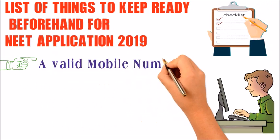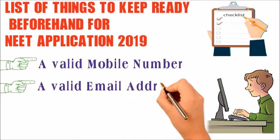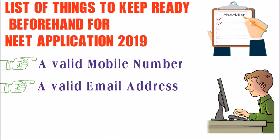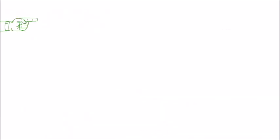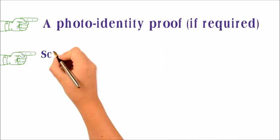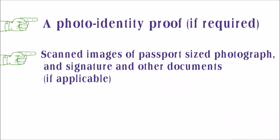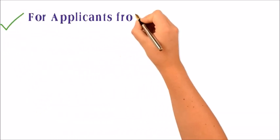For the list of things to keep ready beforehand: number one is a valid mobile number, a valid email address, Class 10 details, Class 12 details, a photo identity proof, scanned images of passport size photograph and signature, and credit or debit card or net banking details.